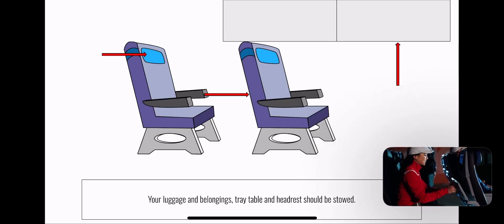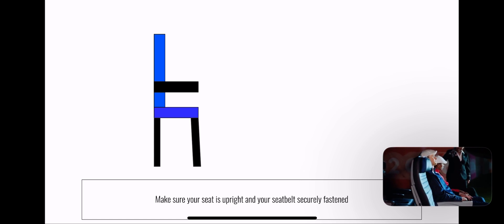Set your tray table, carry-on items, headrest, and footrest. Make sure your seat back is upright and your seat belt is securely fastened.